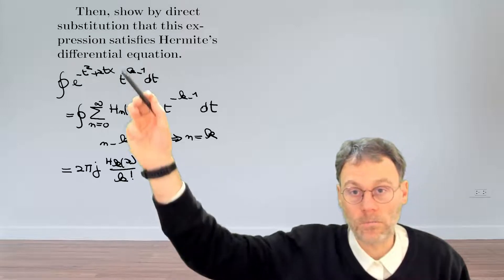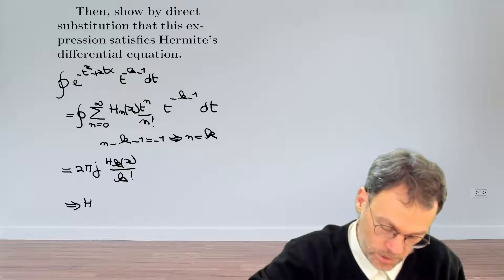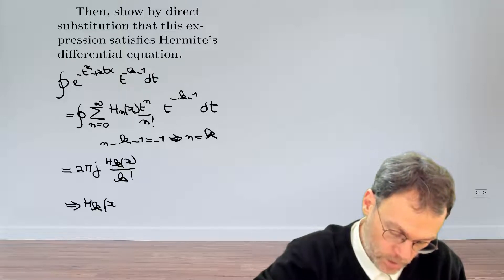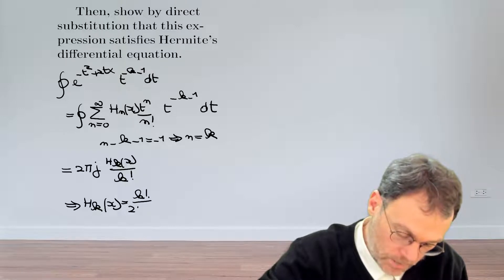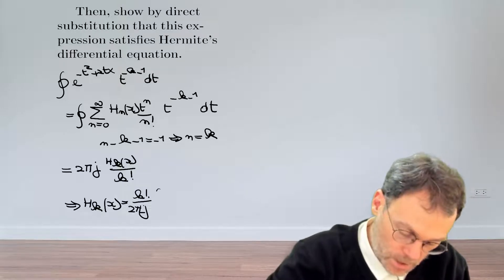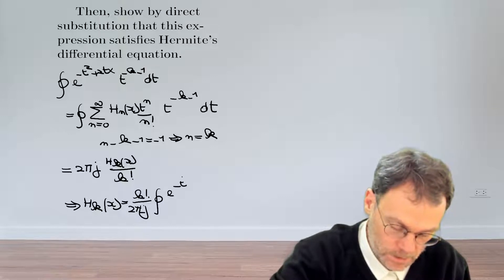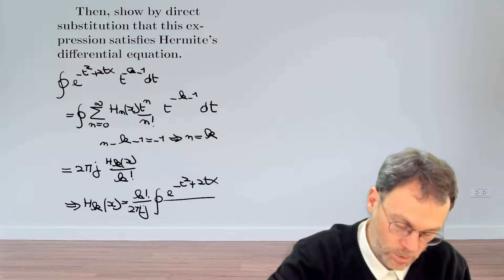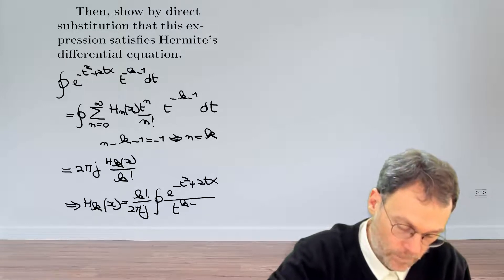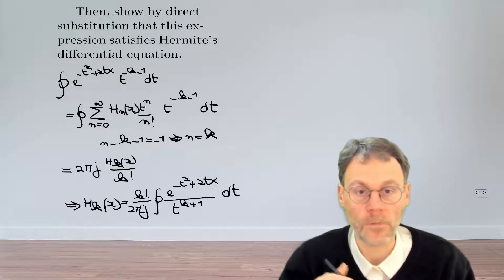Combining these two pieces of information gives us the end result: we can write the Hermite polynomial of order k as k factorial divided by 2πj, times the contour integral of exp(-t² + 2tx), with t to the power of k plus 1 in the denominator, dt.